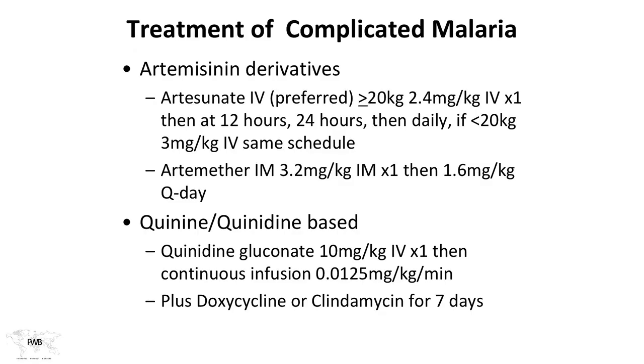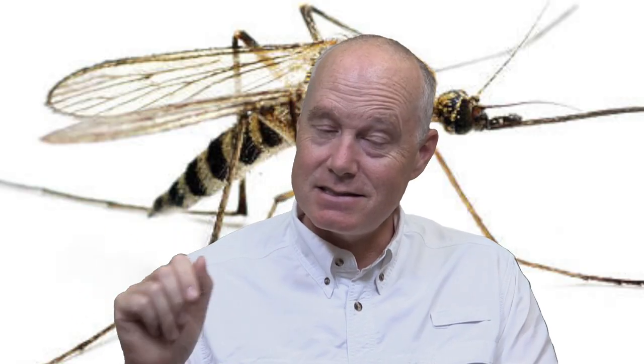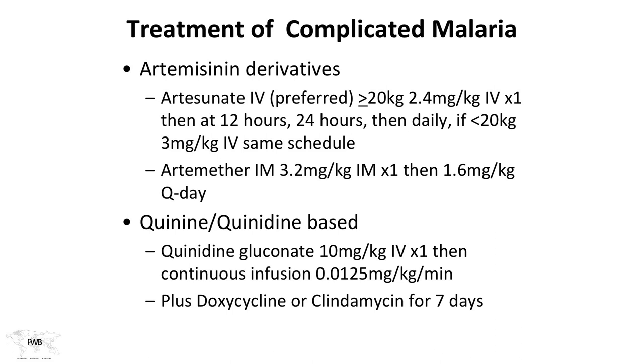Complicated malaria carries significant mortality even with the best treatment. Globally, IV artesunate is the preferred approach for severe malaria. In the United States, artesunate IV is only obtainable through the CDC under certain circumstances, so IV quinidine gluconate infusion in an intensive care unit with cardiac monitoring is often used instead.